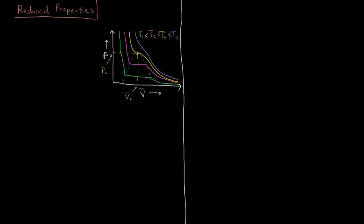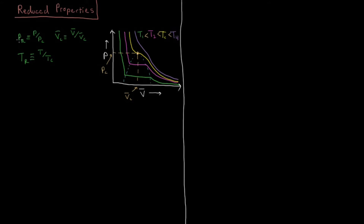Reduced properties of gases are defined in terms of these critical properties. The reduced pressure is defined as the pressure divided by the critical pressure. The reduced molar volume is defined as the molar volume divided by the critical molar volume. And the reduced temperature is defined as the temperature divided by the critical temperature. So at the critical point, all three — reduced pressure, reduced volume, and reduced temperature — are all equal to one.